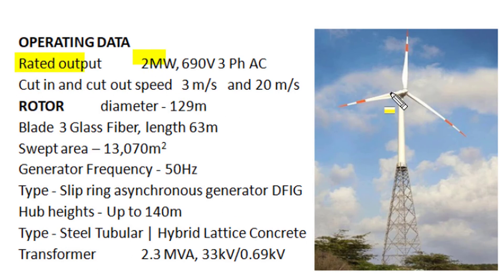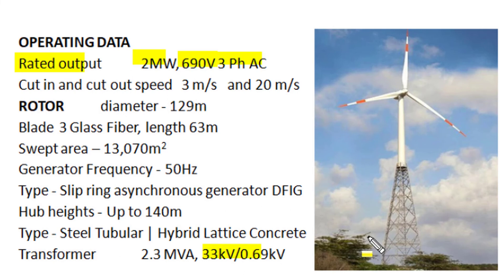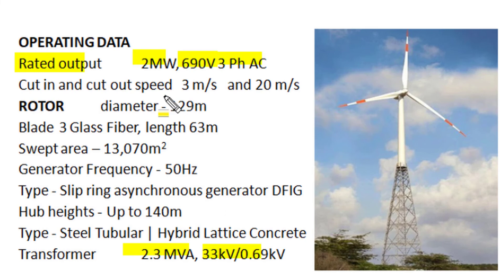Its rated output is 2 megawatts, and the generator produces three-phase alternating current at 50 Hz at 690 volts. This voltage is stepped up by the internal transformer placed in the nacelle to 33 kV for grid connectivity. The transformer rating is 2.3 MVA, in line with the rated output of 2 megawatts. The cut-in speed is 3 meters per second and the cut-out speed is 20 meters per second, so within this speed range it can produce electrical output effectively.